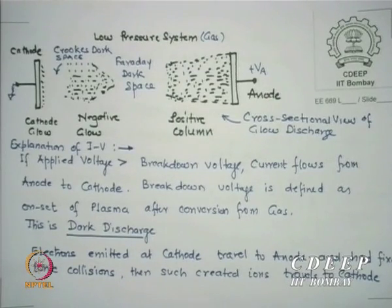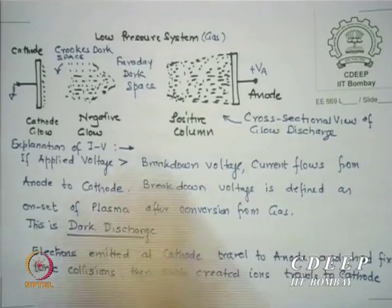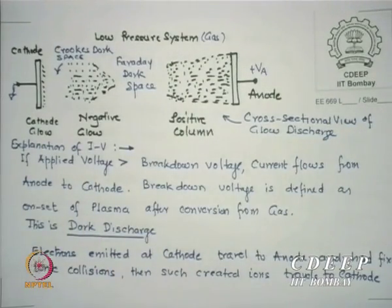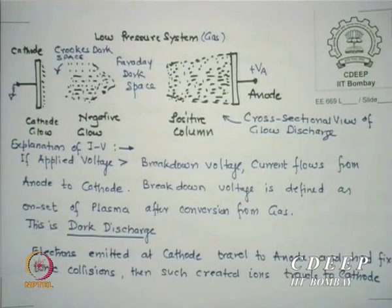Electrons emitted at the cathode travel toward the anode. With gas present, some electrons strike gas molecules and create ions. Ions being positively charged travel toward the cathode, while electrons travel toward the anode. The created ions travel toward the cathode driven by the applied electric field, picking up energy equal to Q × V.